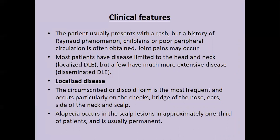Regarding clinical features of DLE: patients usually present with a rash, but a history of Raynaud's phenomena, chilblains, or poor peripheral circulation is often obtained, and joint pains may also occur. Most patients have disease limited to head and neck (localized DLE), with few having extensive disseminated DLE. In localized DLE, lesions occur mainly on the cheeks, bridge of nose, ear, side of neck, and scalp. Alopecia occurs in approximately one-third of patients and is scarring alopecia — usually permanent.